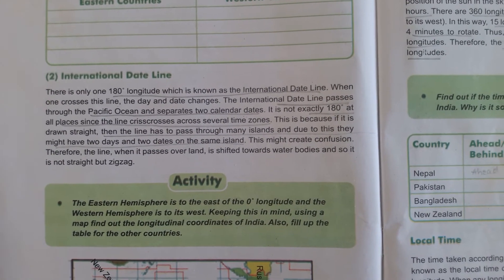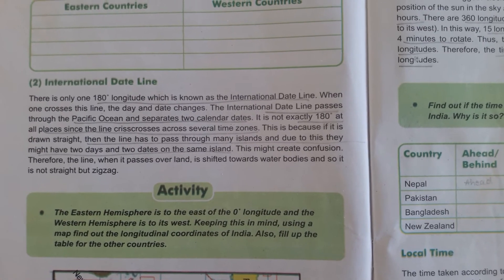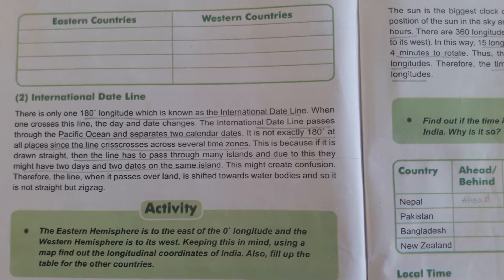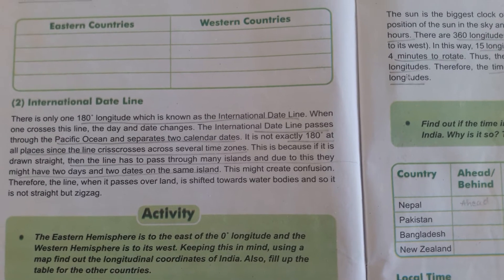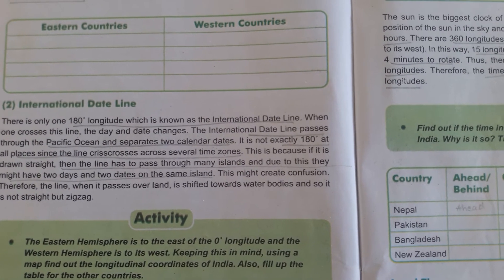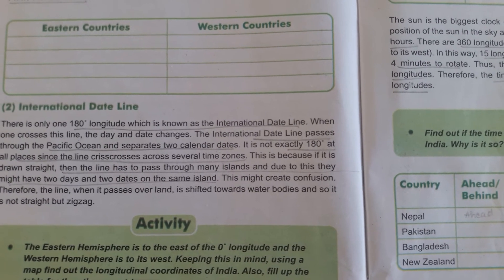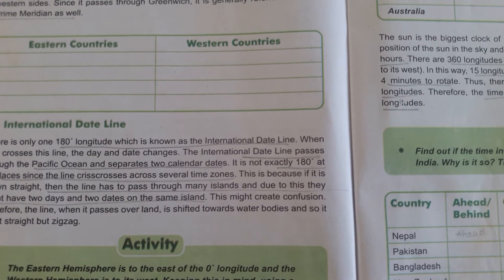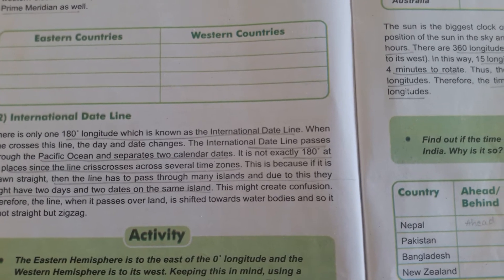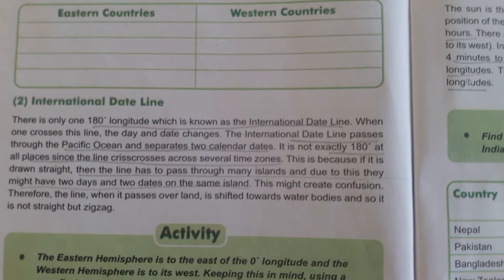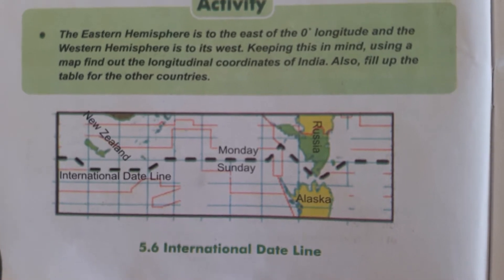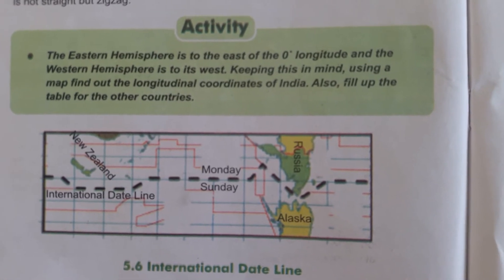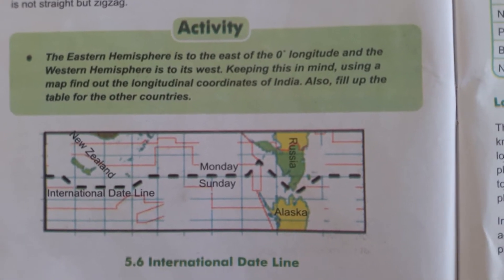If you draw the international date line straight, then many islands through which this line passes would have two days and two dates on the same island, which would create confusion and problems. So, this line is drawn in a zigzag manner, shifted towards water bodies, so it is not straight but zigzag. Here in the dotted line you can see how the international date line passes in a zigzag to avoid confusion.